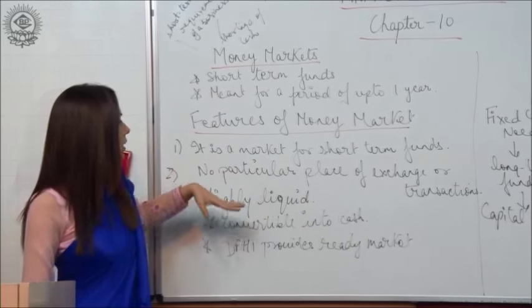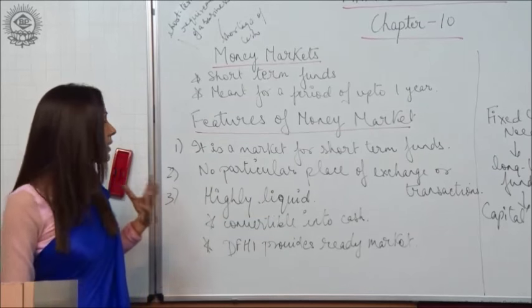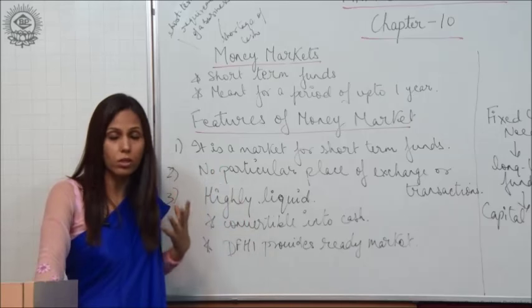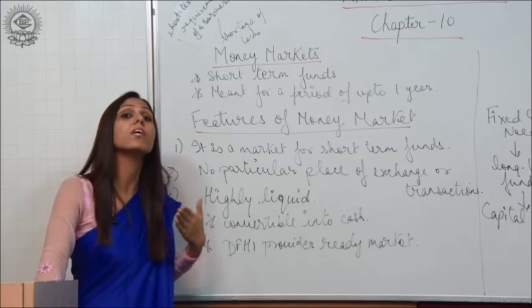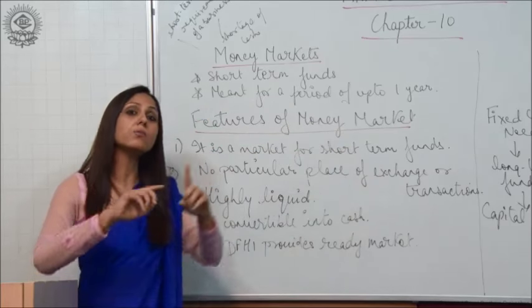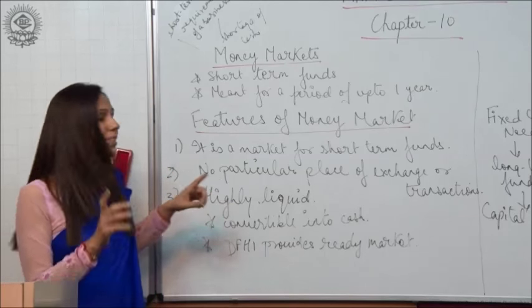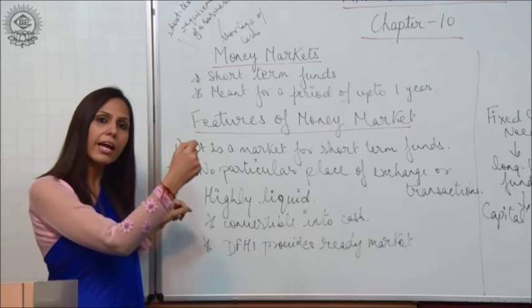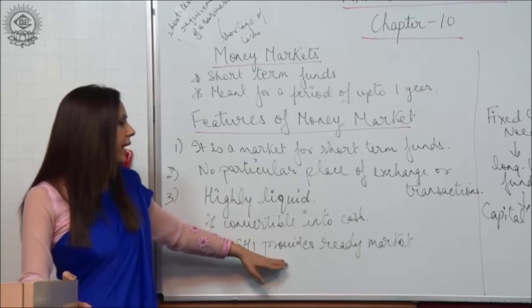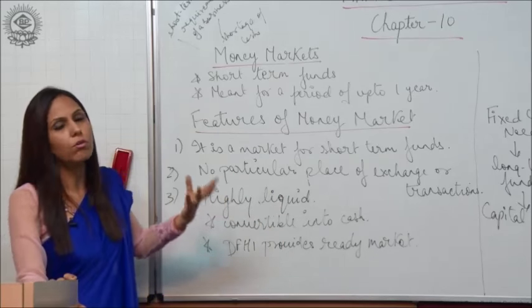The third feature is that the money market is highly liquid, or volatile. It is highly liquid because it deals with shorter-term funds which are easily convertible into cash. The money market deals with those money instruments which are easily convertible into cash. DFHI provides a ready market for it, so they are easily convertible into cash.